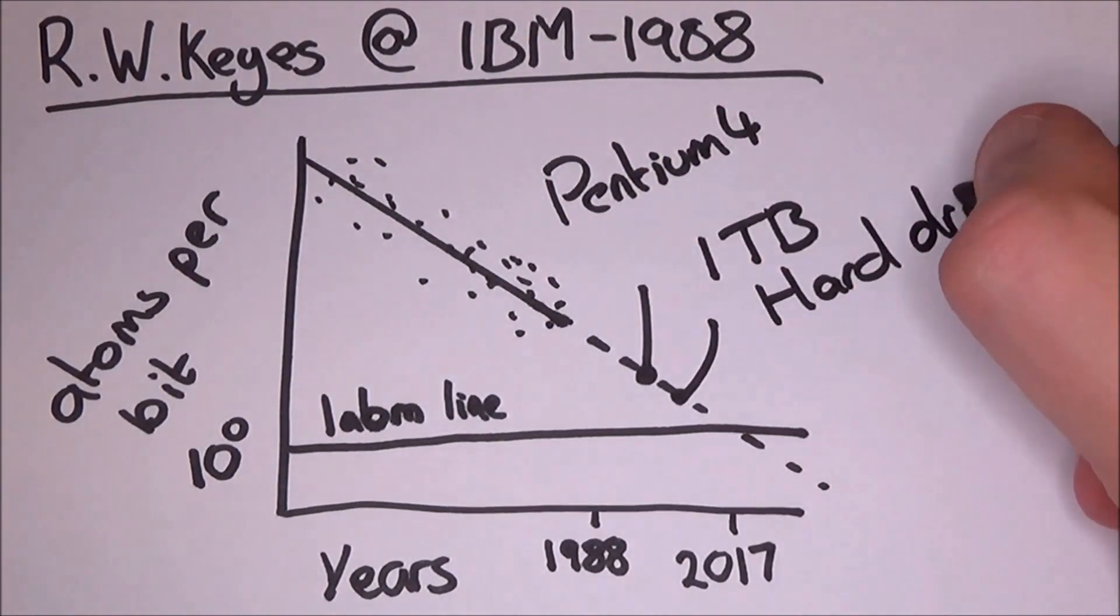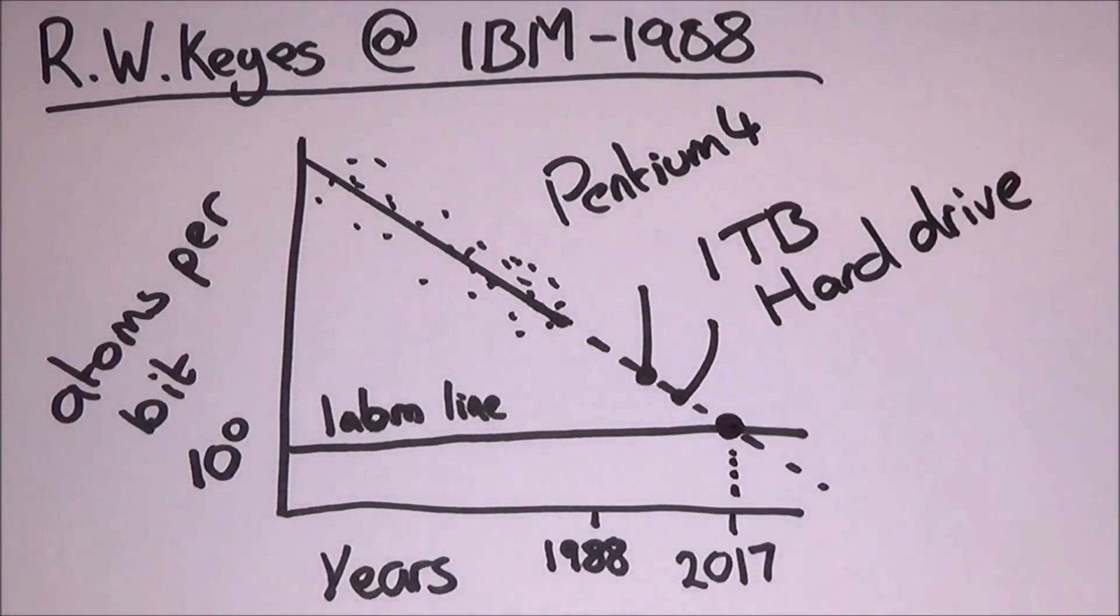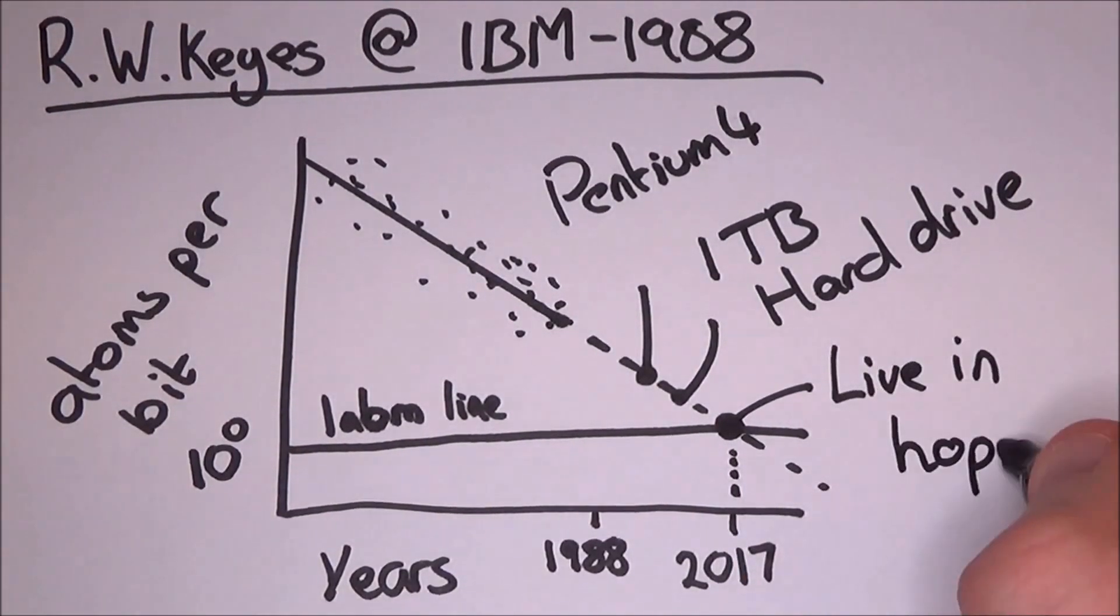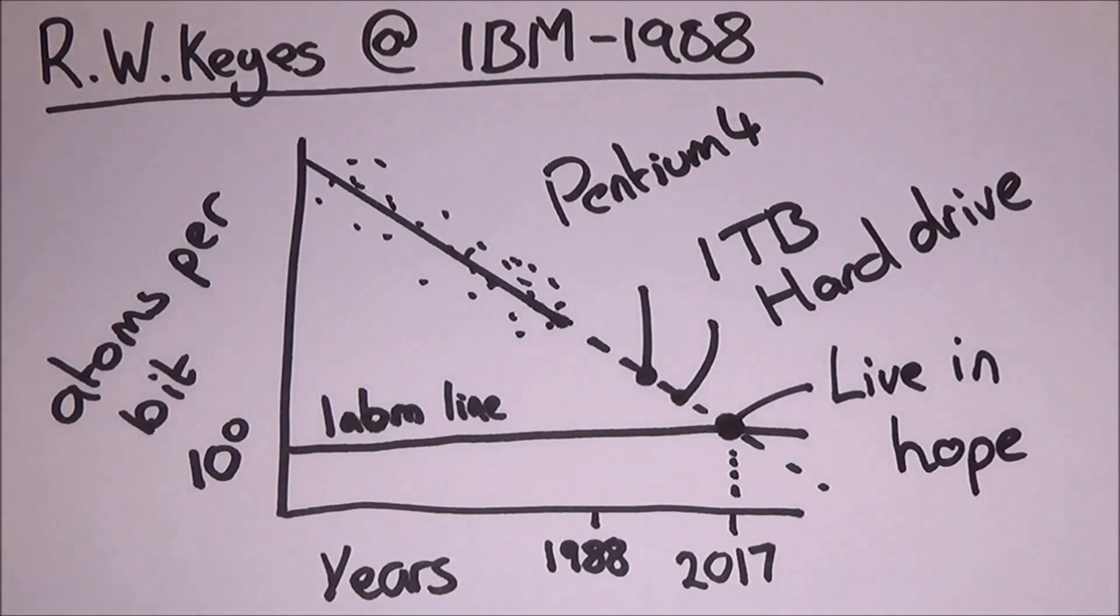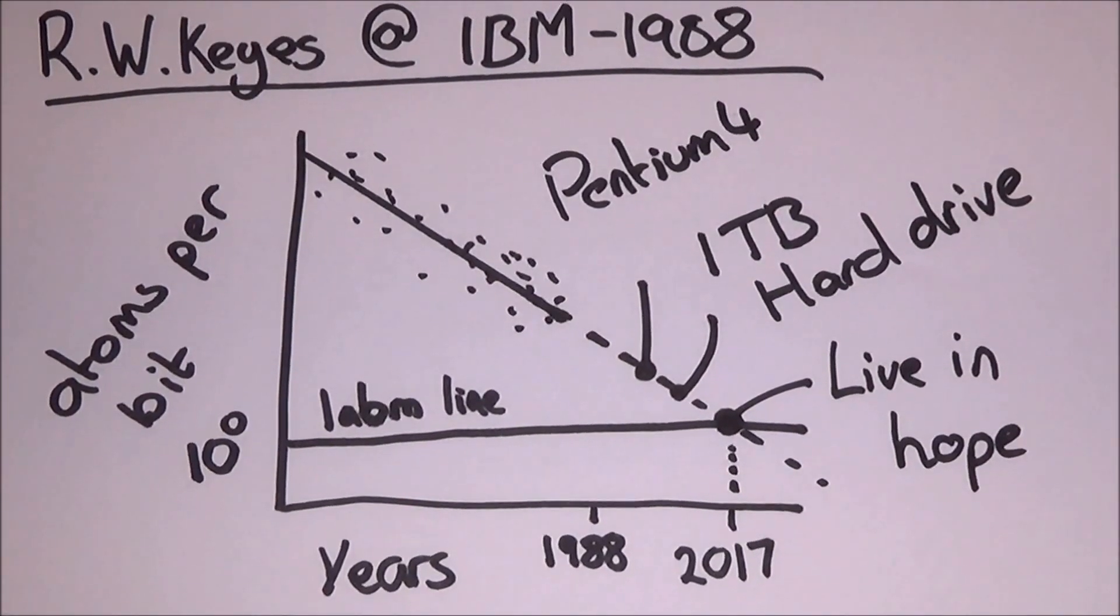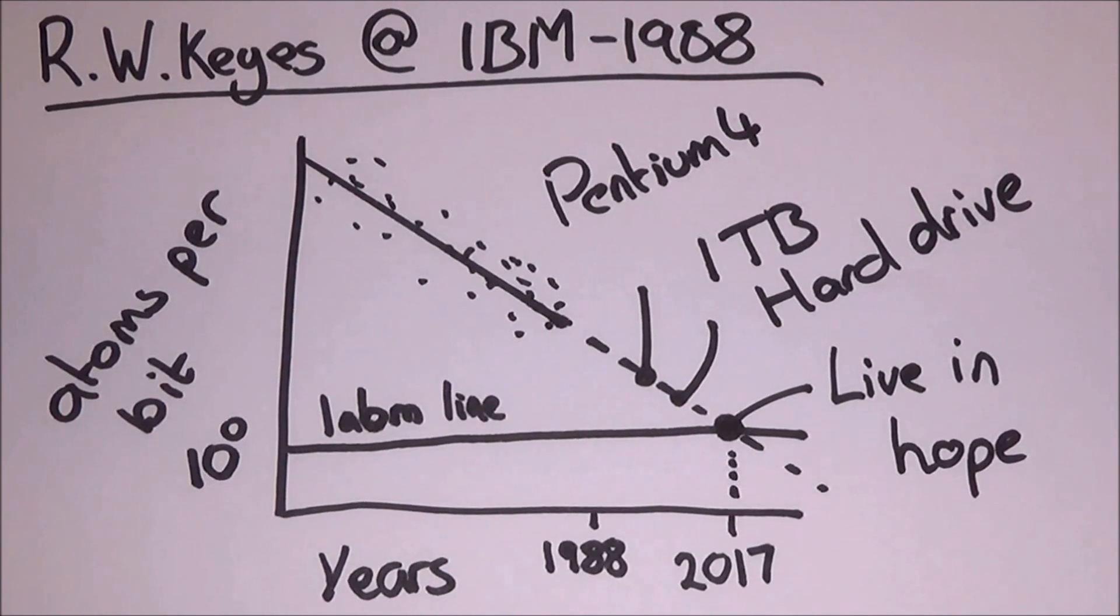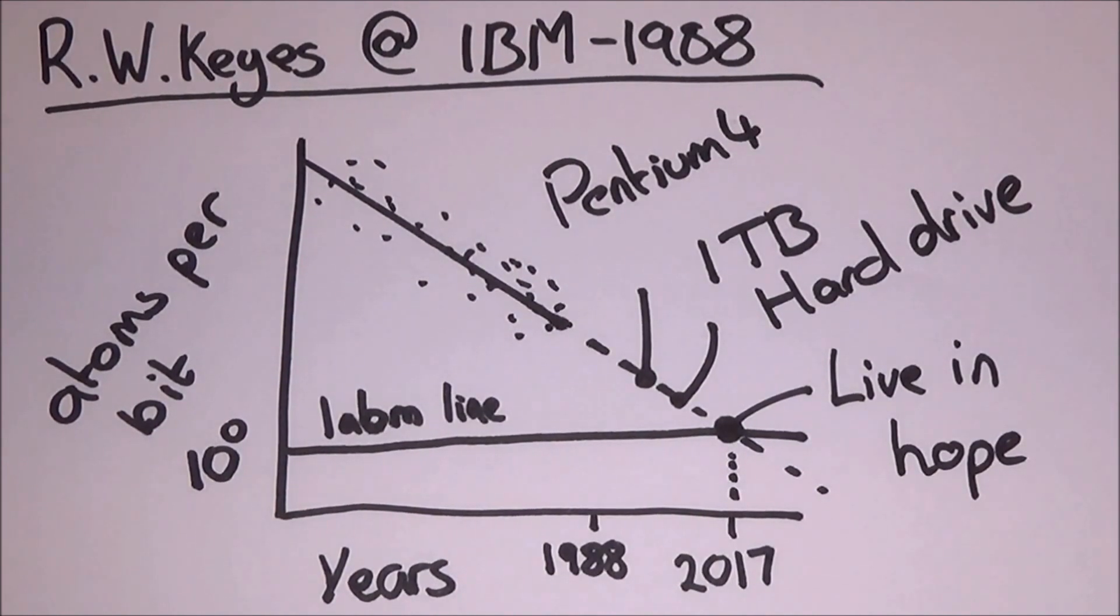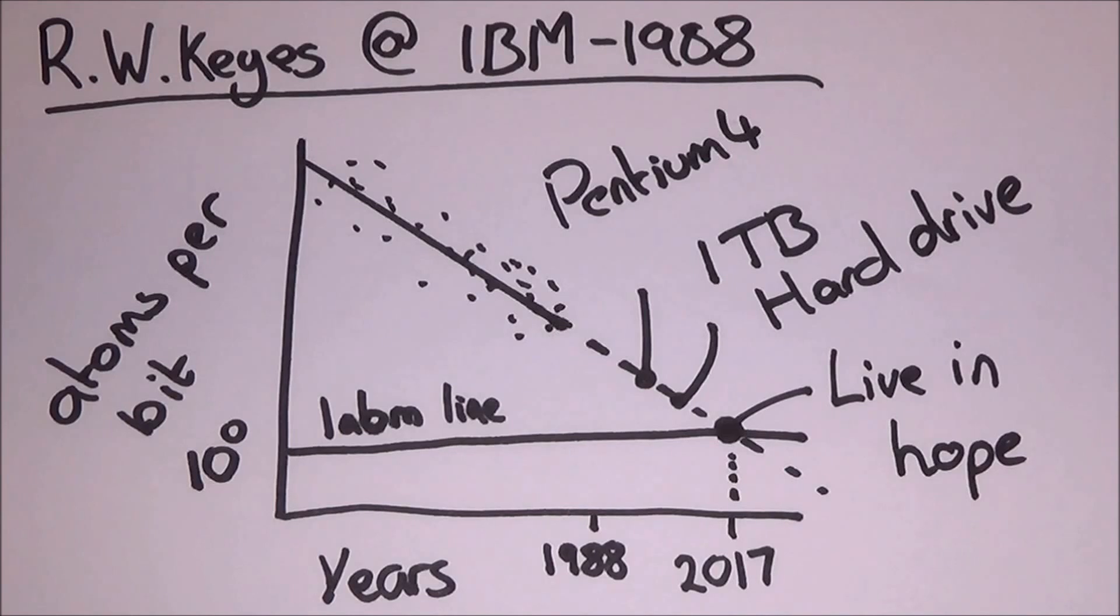This dot here is for the Pentium 4 processor, and this dot here is for a one terabyte hard drive. And then it's predicted here in 2007 we're going to reach a point where one atom will hold one bit. That is pretty ambitious considering it has some implications with thermodynamics, but we aren't gonna let that stop us.